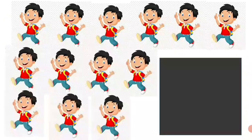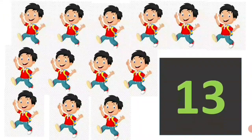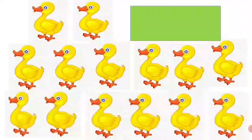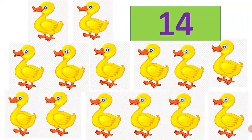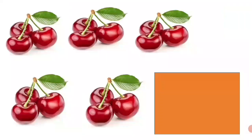Children, what are these? These are boys. How many boys are there? There are 13 boys. Children, what are these? These are dogs. How many dogs are there? There are 14 dogs.